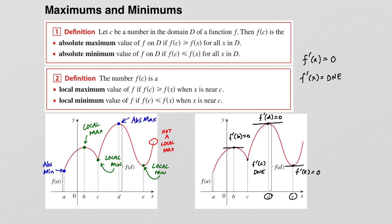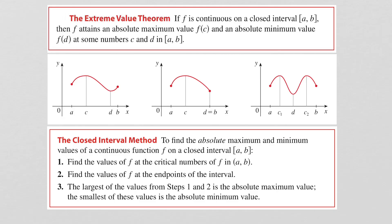We'll say more about this in just a little bit to make this more precise, but for now I just want you to have an intuition on where this is headed. The extreme value theorem guarantees that if f is a continuous function on a closed interval from a to b, then it must attain an absolute maximum value and an absolute minimum value at some numbers in the interval from a to b.